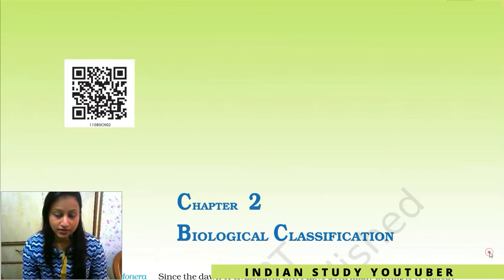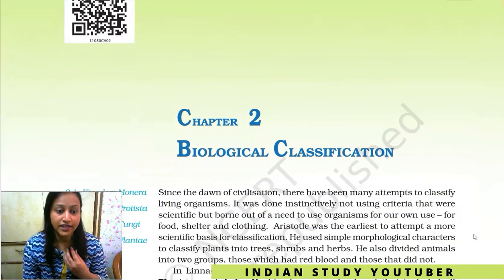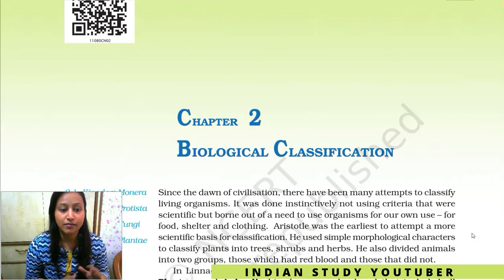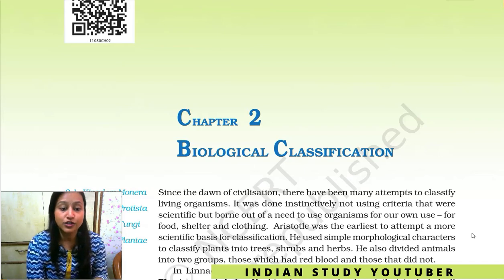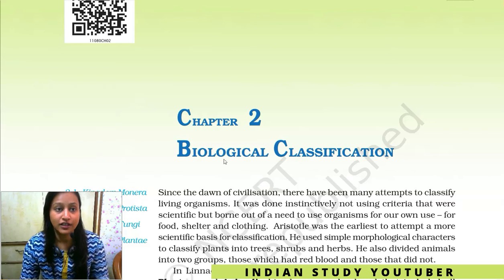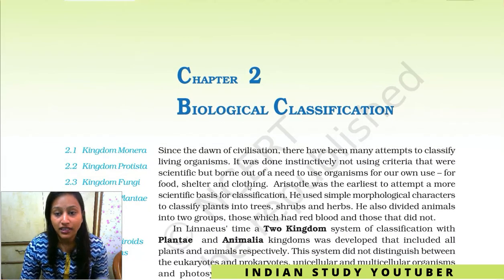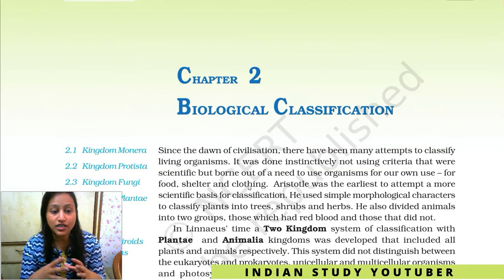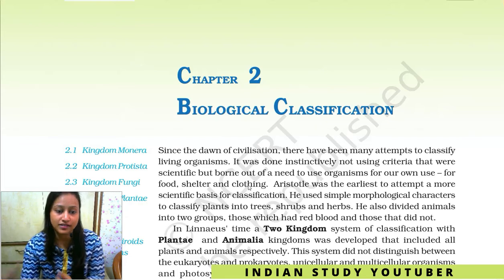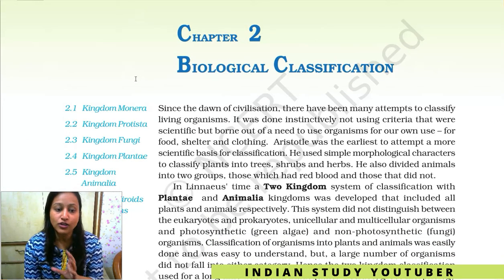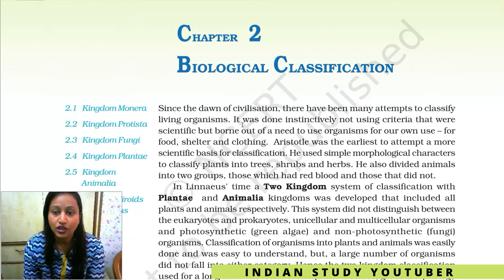Hello everyone. Let's start from diversity in living organisms, part 1. We are going to study 11th biology chapter 2, biological classification. In this chapter, we will see what kind of biology we are going to study — whether we study different types of biology, plants, or animals. In this video, we are going to study about this chapter and about classification.